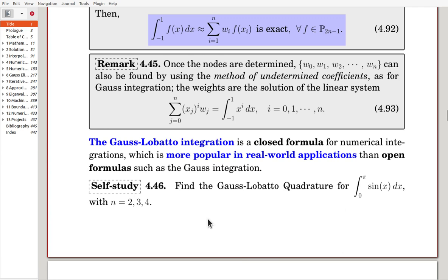Here finally we have a self-study problem. Try to find the Gauss-Lobatto quadrature for the same problem we treated earlier along with Gauss integration. By using Gauss-Lobatto quadrature, you can see quite similar accuracy. Try to do it yourself. This is the end of the section. Thank you.